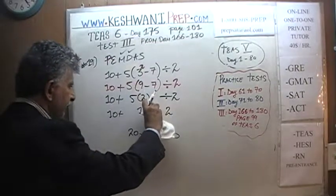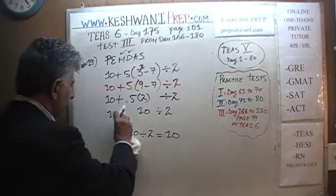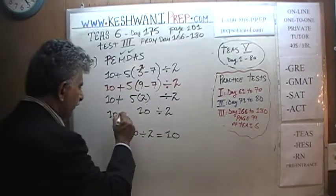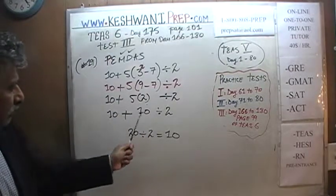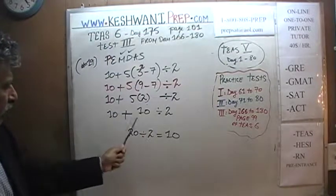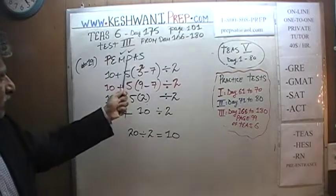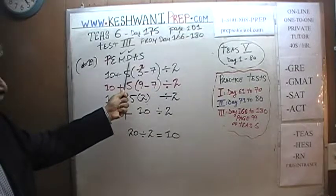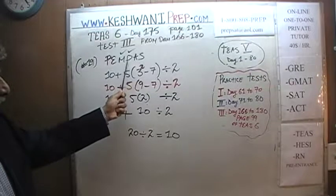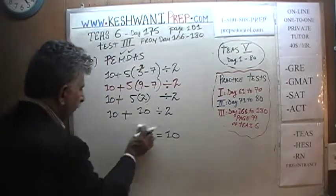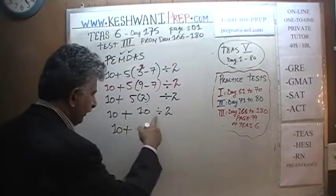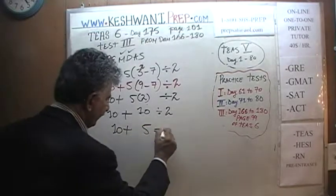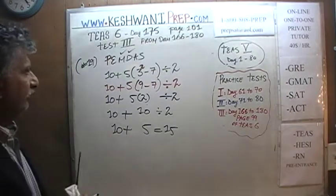When we get to this stage we have only two operations left: addition and division. Which one do we do first? This order of operations tells us: addition comes after division — multiplication, division, addition. Therefore we do not do 10 plus 10. The 10 comes down and we do 10 divided by 2, which is 5. Therefore the answer is 15.